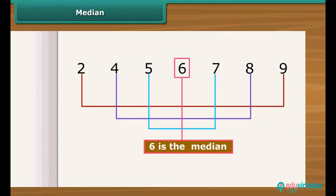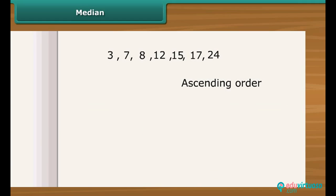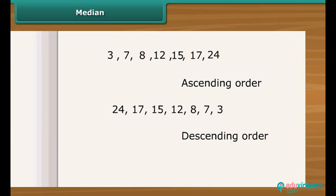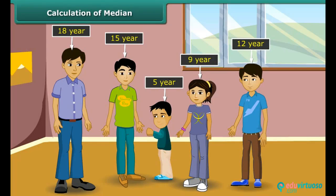Median is the value which lies in the middle of a group of numbers that have been arranged in order by size. Let us find the median of these numbers. Firstly, we need to put these numbers either in ascending or descending order. As you can see, the middle number is 12 — it has three numbers to its right and three numbers to its left, so the median is 12.